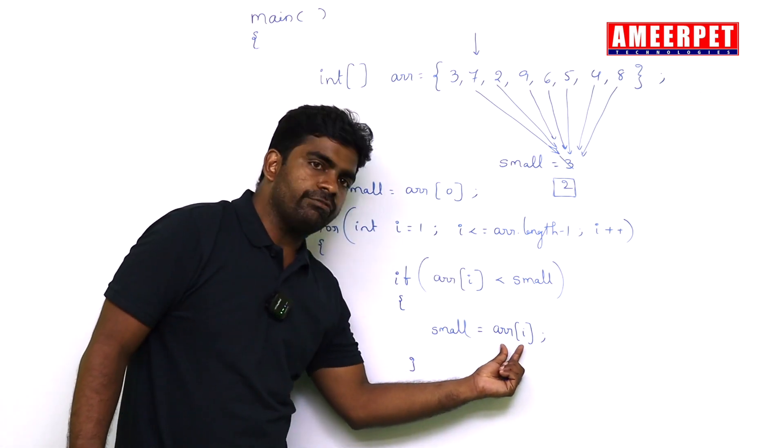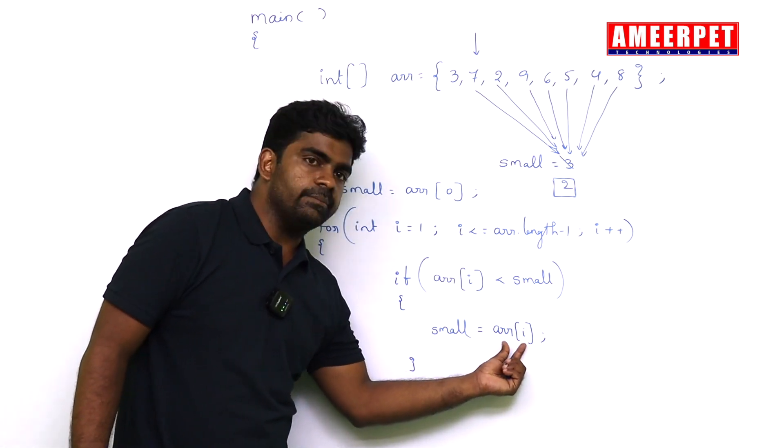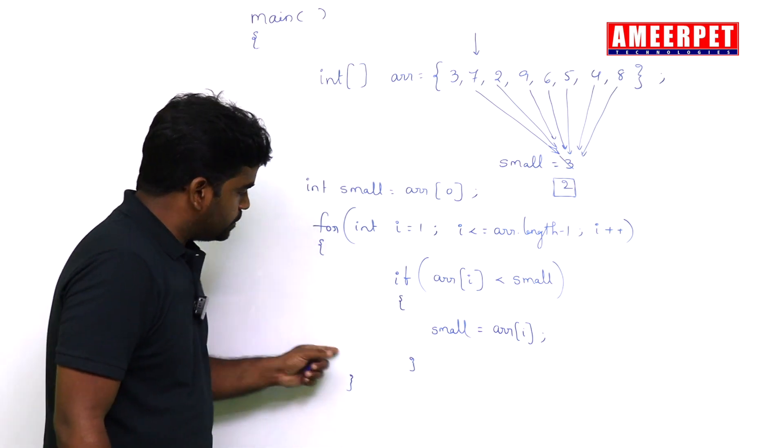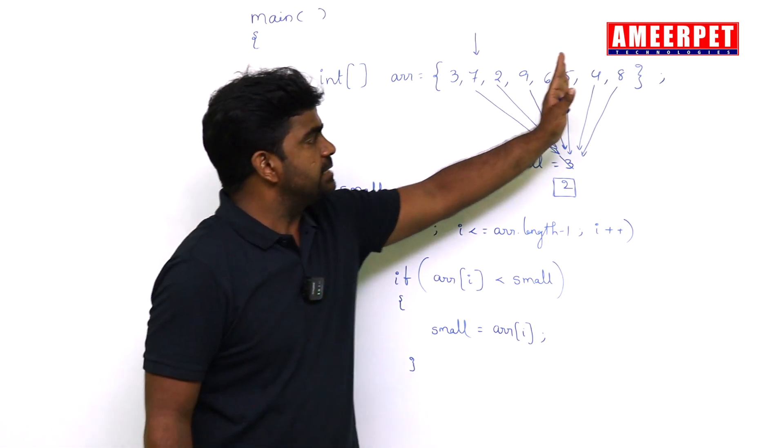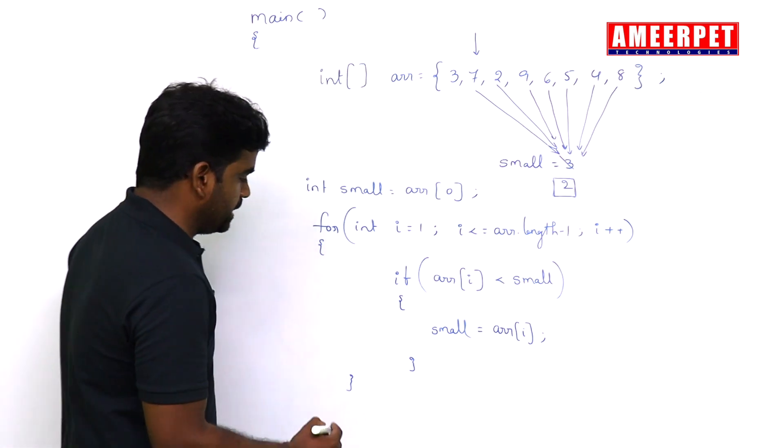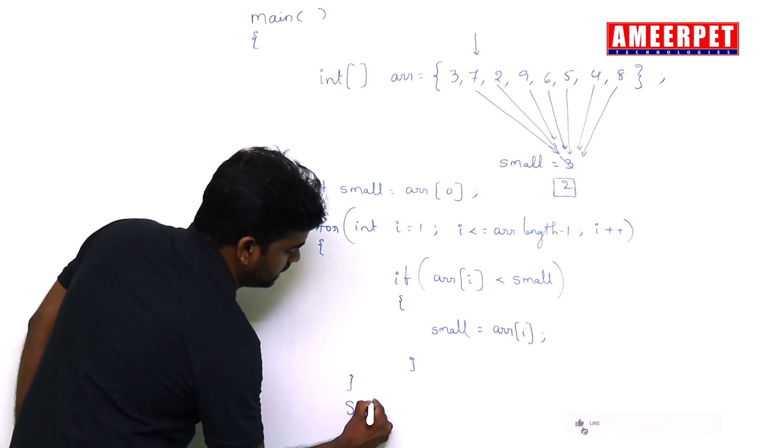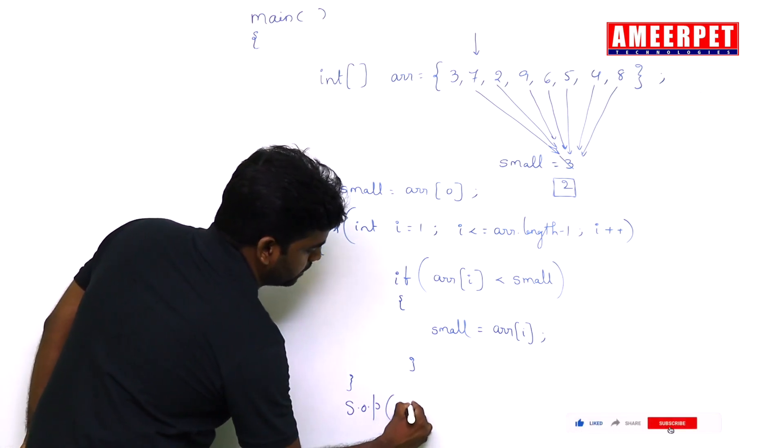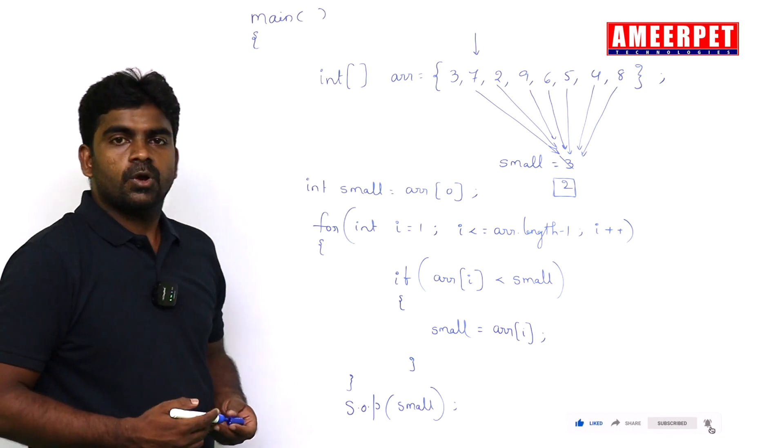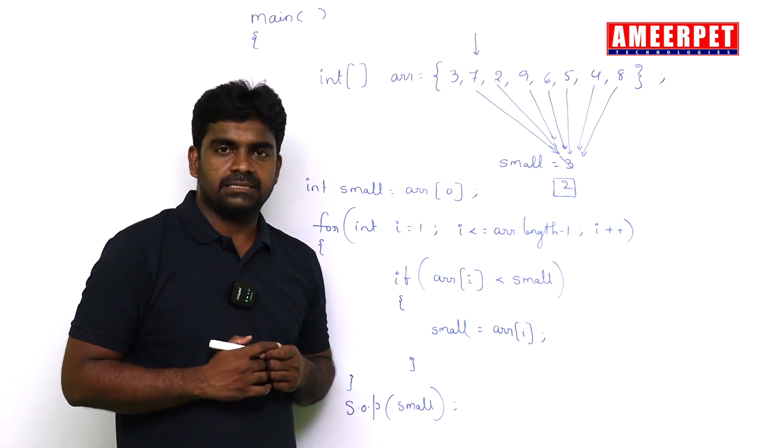This is the simple way of finding the smallest element and storing it into the variable small. This loop will repeat until it reaches the end. Finally it contains the smallest element, and we are printing the smallest element in the array, that is small. Hope you understood. Please practice. Thank you all.